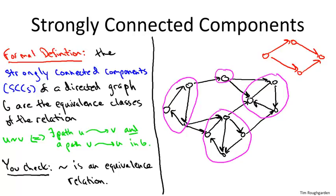If you take any two nodes in two different circles, you either won't have a directed path from the first to the second, or you won't have a directed path from the second back to the first. In fact, the structure of the strong components in this graph exactly mirrors the directed acyclic graph we started with. You can't move from any of the circled SCCs on the right to any of the circled SCCs on the left — from the rightmost nodes, there are no directed paths to the leftmost nodes.